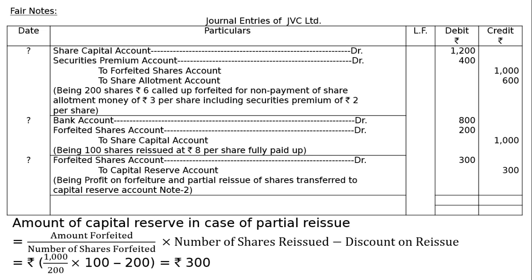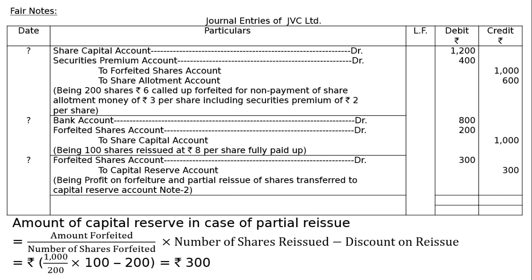The journal is always to be totaled. Total debit: Rs. 4600. Total credit: Rs. 4600. This is the final answer.